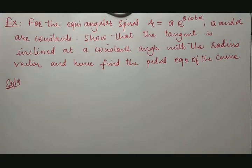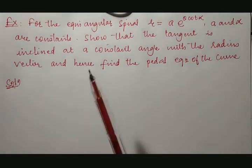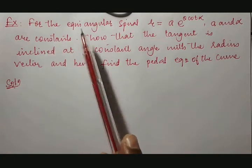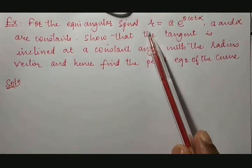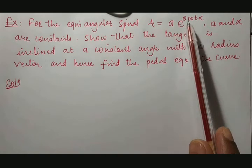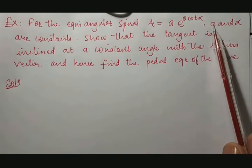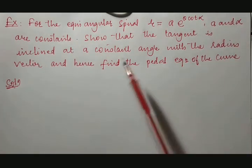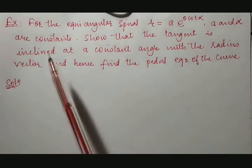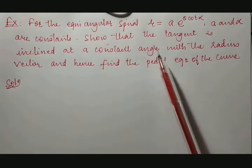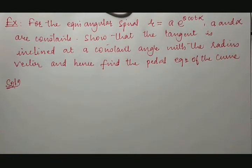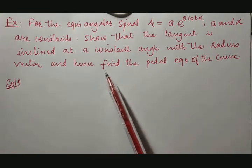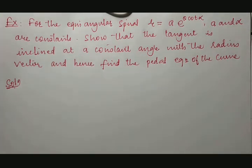In this class, we are going to discuss an application-oriented example for finding the pedal equation. The example is given like this: for the equiangular spiral r is equal to a into e raised to theta cot alpha, where a and alpha are constants. Show that the tangent is inclined at a constant angle with the radius vector and hence find the pedal equation of the curve.